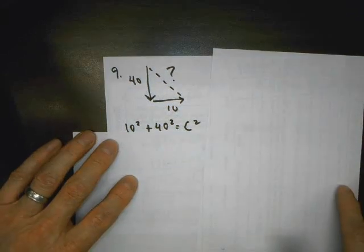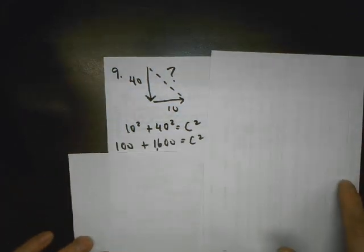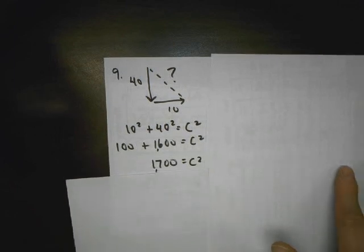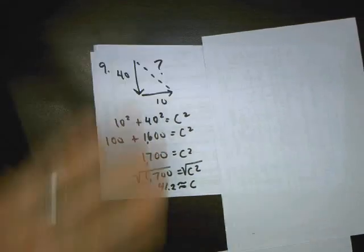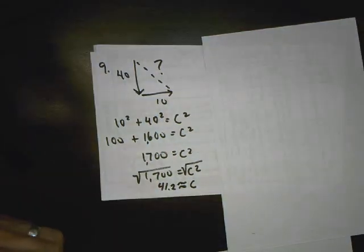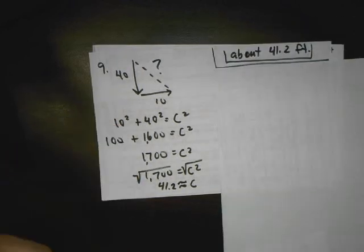I got leg squared plus leg squared equals hypotenuse squared. Square those doesn't mean multiply by 2. Add them up. Take the square root of both sides. And at this point, we'll be using a calculator so you can do rad 1700. Hit the square root button. Do not divide by 2. And your answer is about 41 and 2 tenths feet.